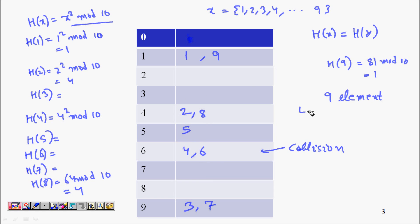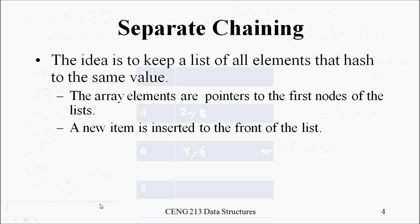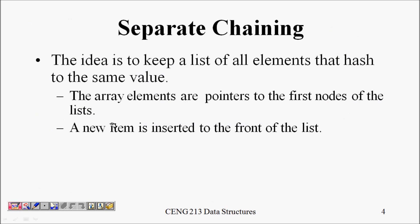Now the question is how to handle these collisions. There must be some ways, and we have to handle them for a hash table to actually be useful.